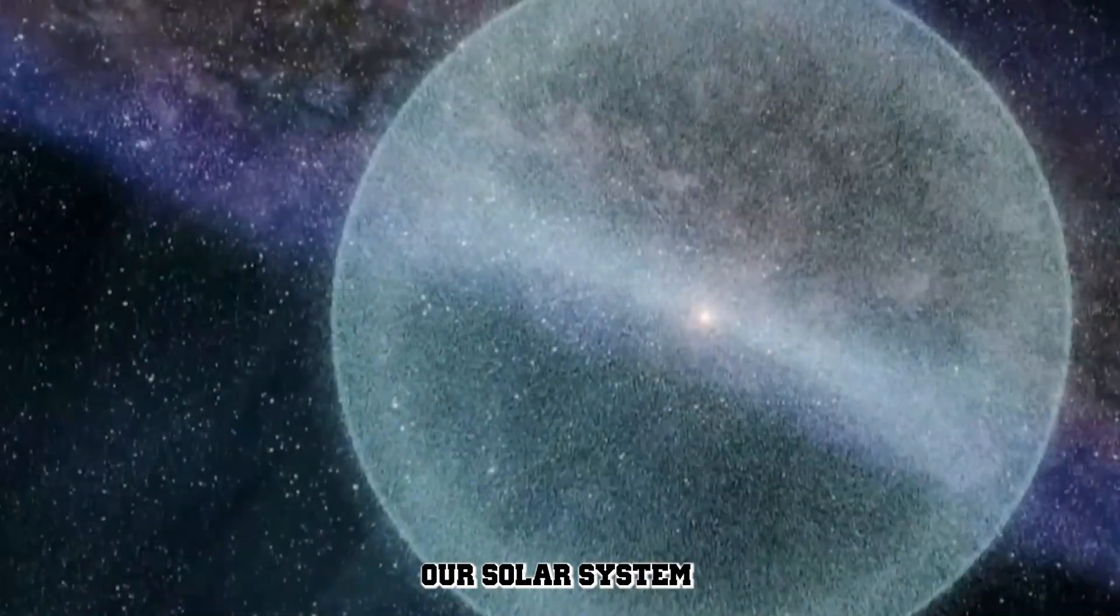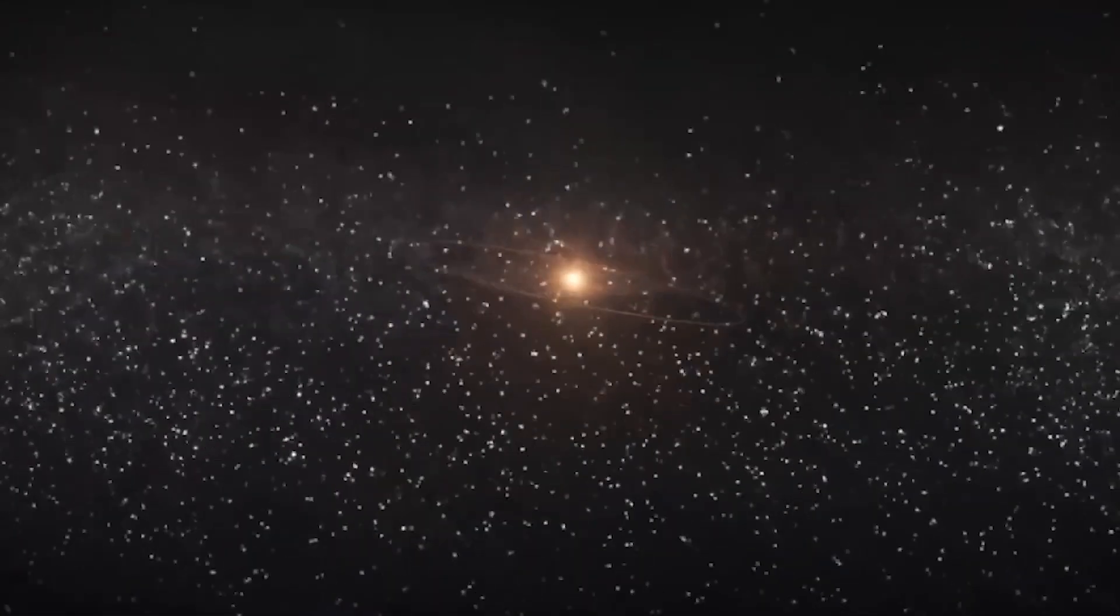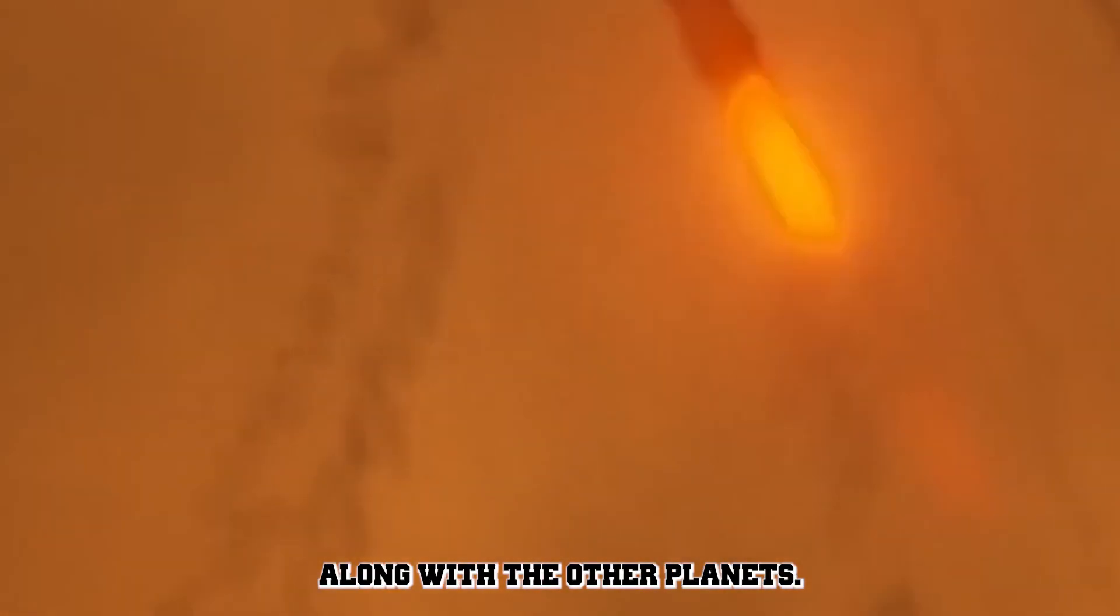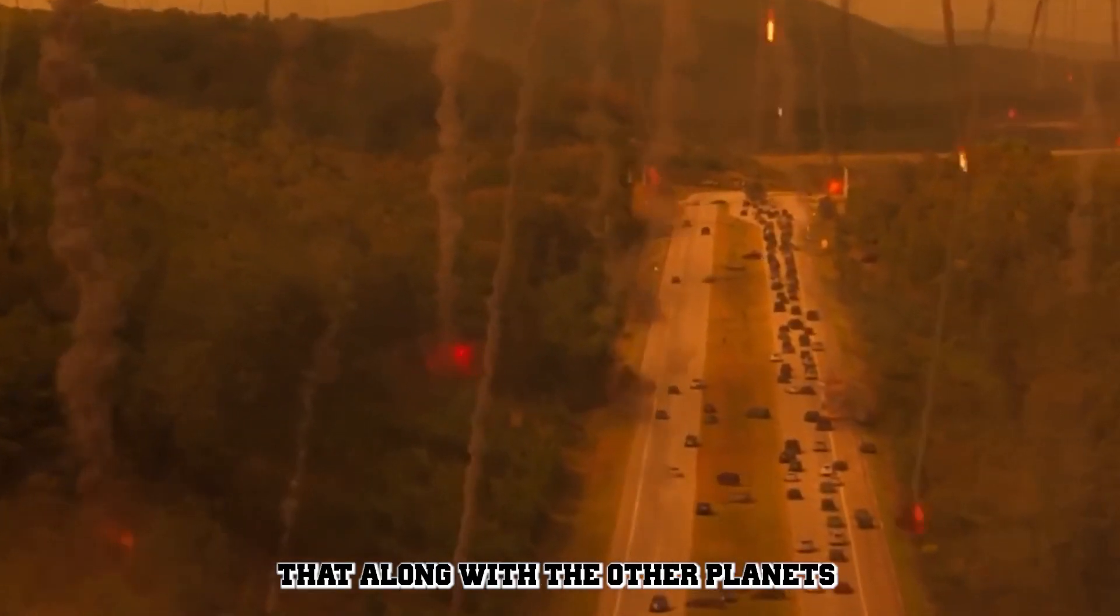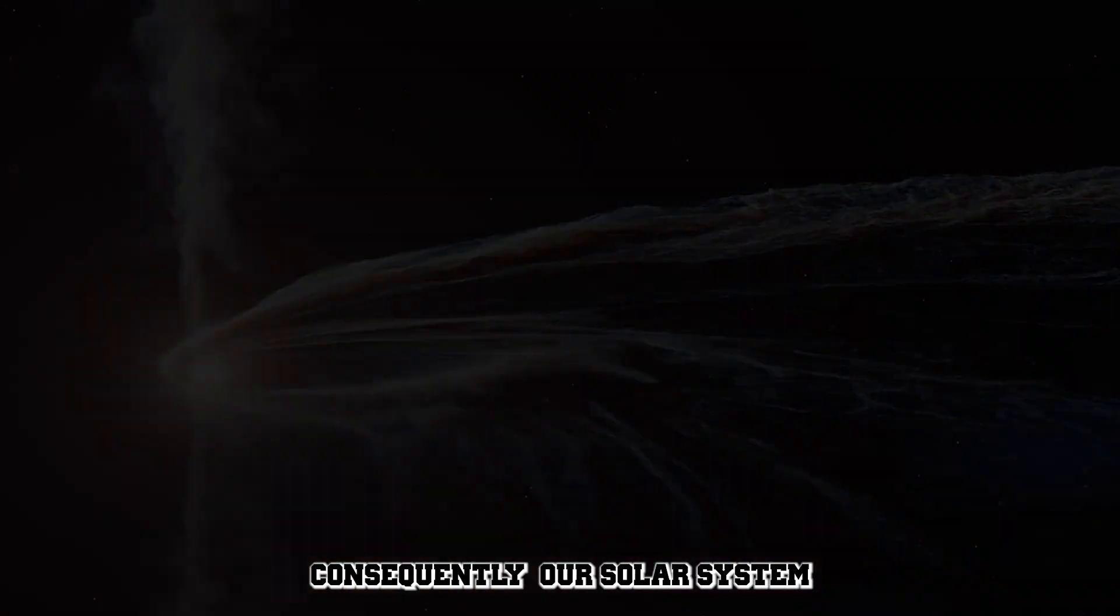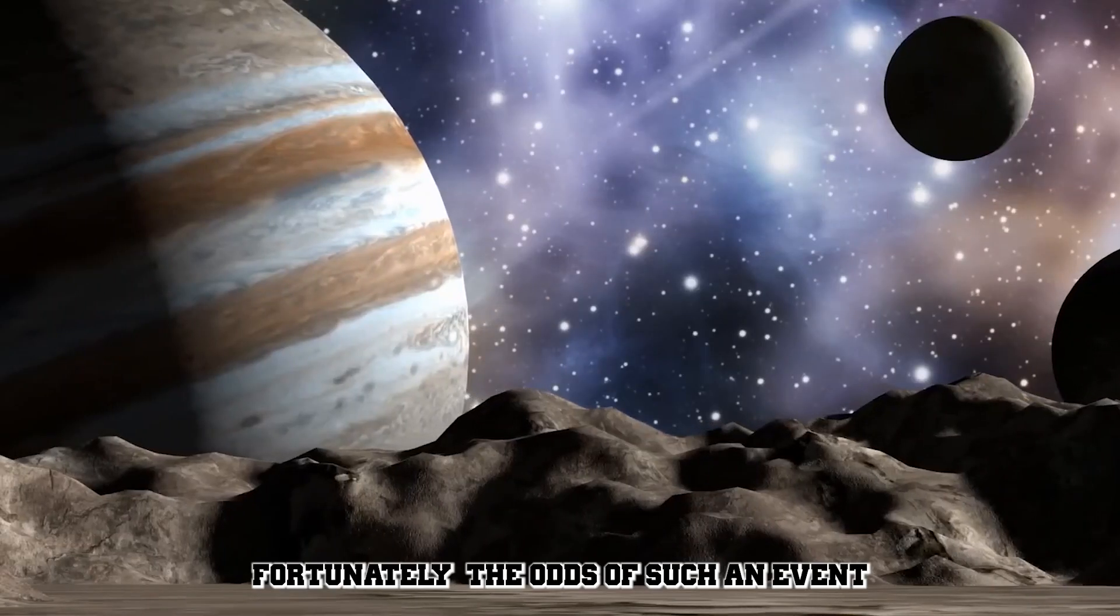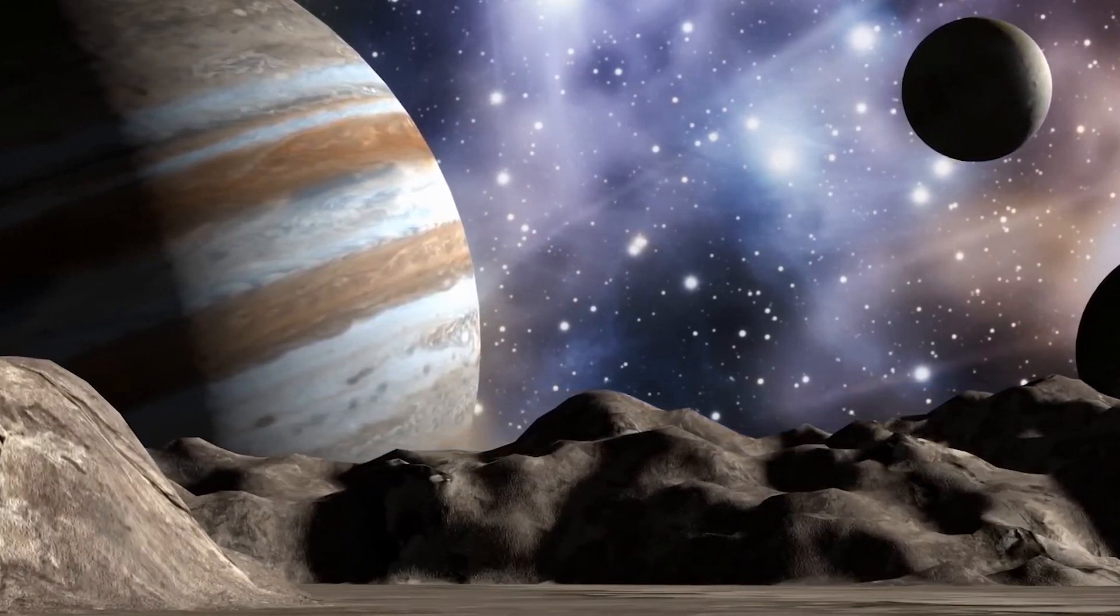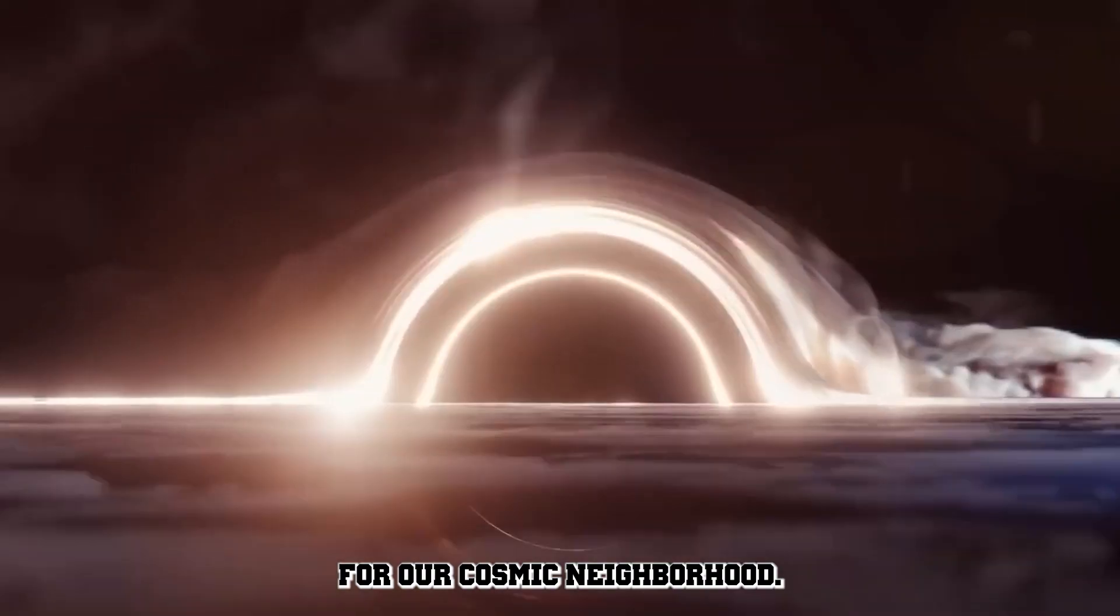If a black hole approached our solar system, the black hole would not have an easy win. The sun would fight back and the black hole's mass would determine the result. Although the sun may survive, there is a possibility that, along with the other planets, it will be destroyed and consumed by the black hole's powerful gravitational pull. Consequently, our solar system would become a fiery, swirling mass of dust and gas centered on the black hole. Fortunately, the odds of such an event occurring are extremely low. But, if it did occur, it would be a disastrous end for our cosmic neighborhood.